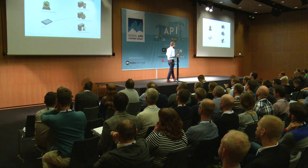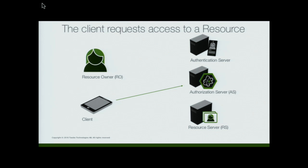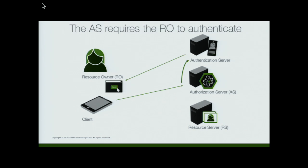So the flow starts like this. We have an app or a client of some sort, and it contacts the authorization server, because it needs access to an API. The authorization server says sure, that's good, but I need you to authenticate the user first. I can't have you access that data if I don't know who the user is. So it turns around, goes to the authentication service, and the authentication service shows some way of authentication for the user. Very commonly, a username/password box that you enter something into.